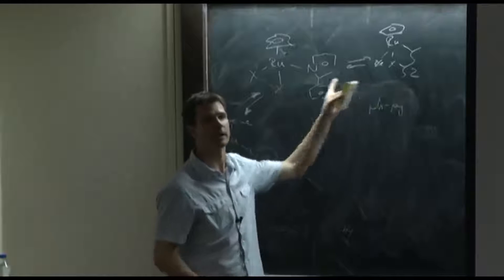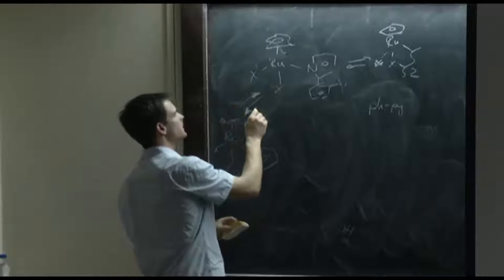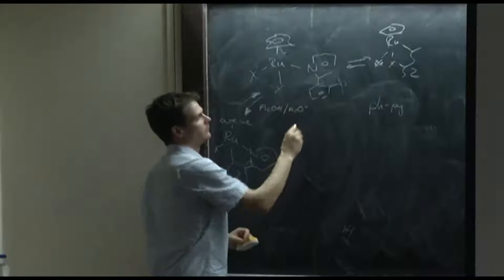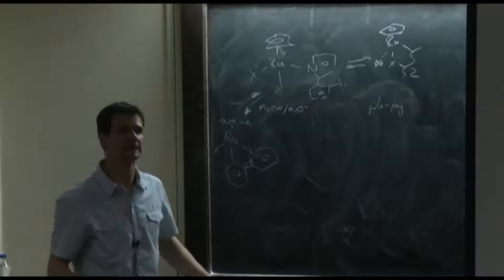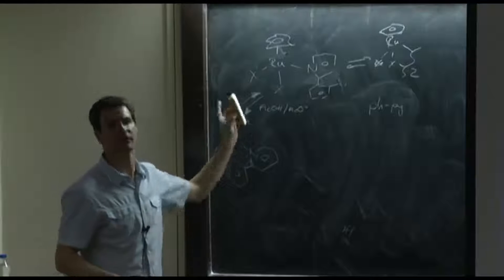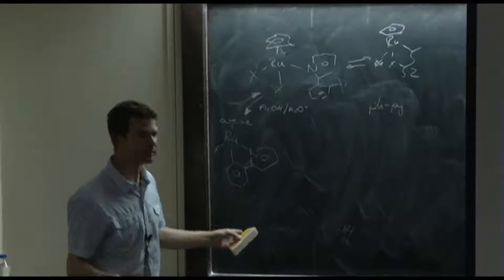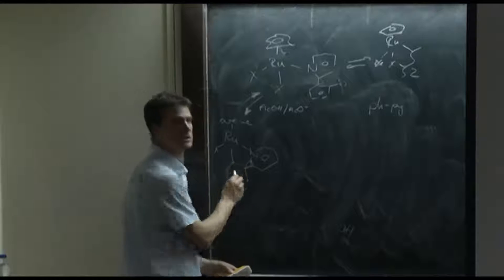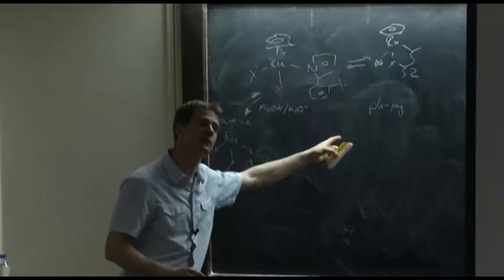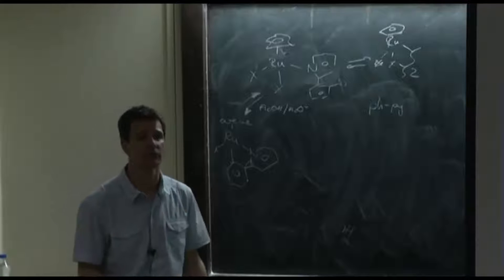Because the coordination is reversible, the cyclometallation is reversible because we have the couple of acetic acid and acetate. So because they're all reversible, we have this a ton of times. And it's random whether it's this position or this position that gets cyclometallated. But each time it's getting cleaved, it's getting deuterated. So that's how we get both positions deuterated.